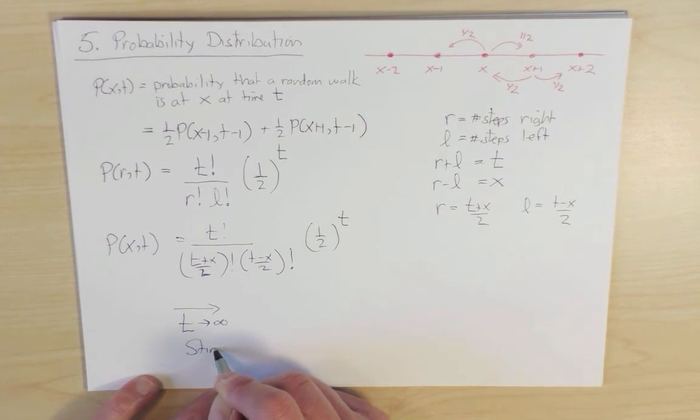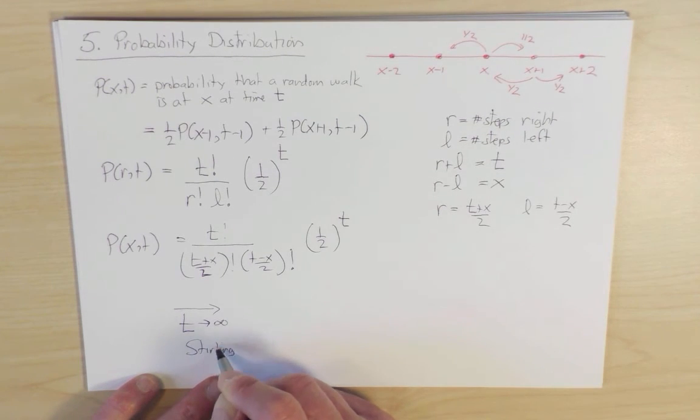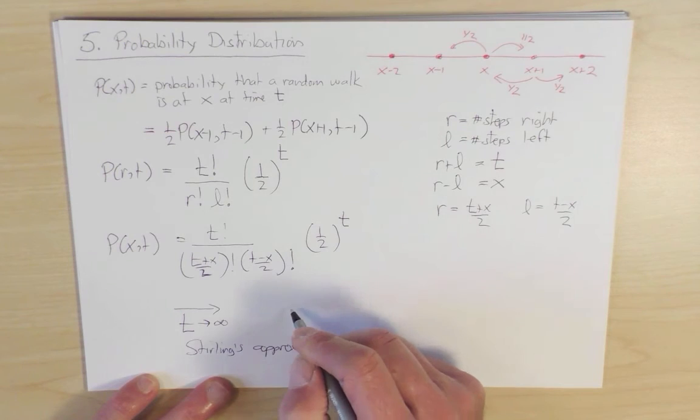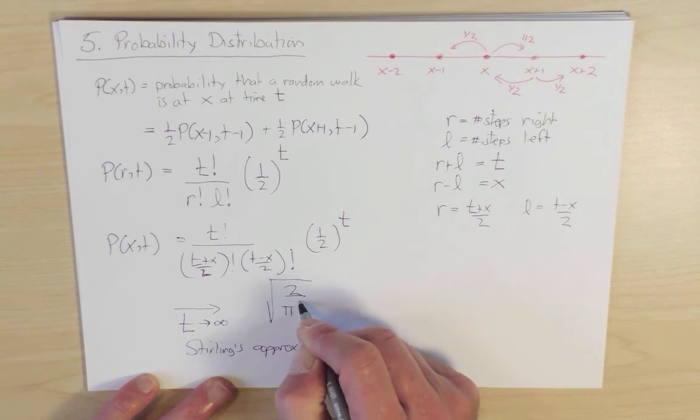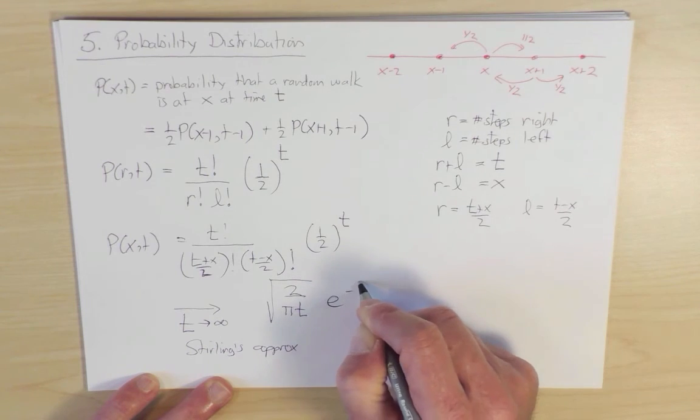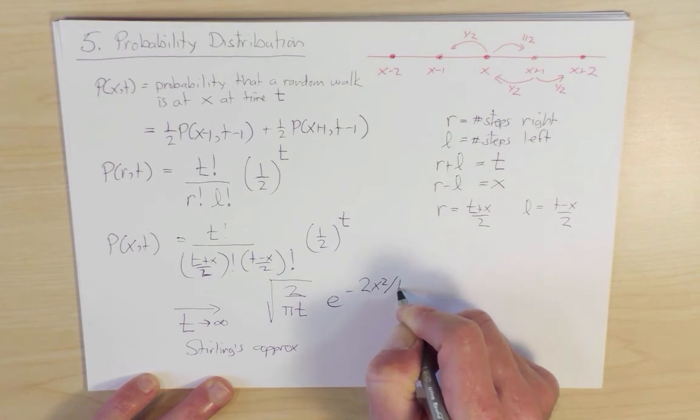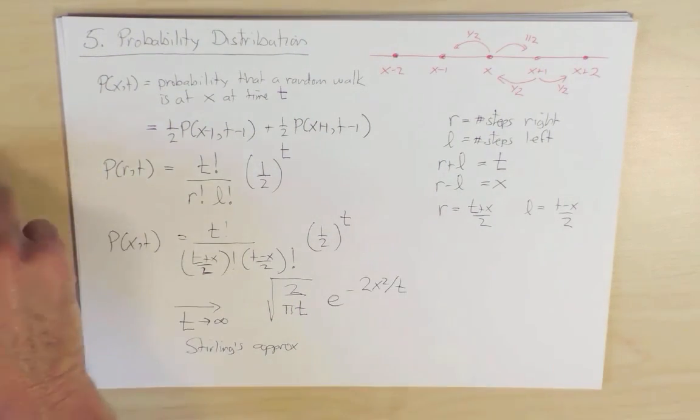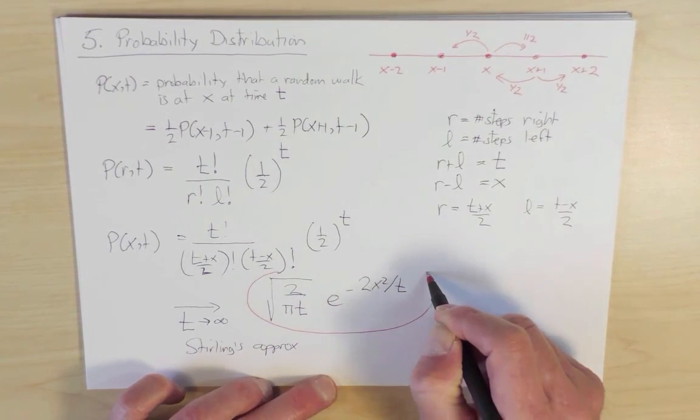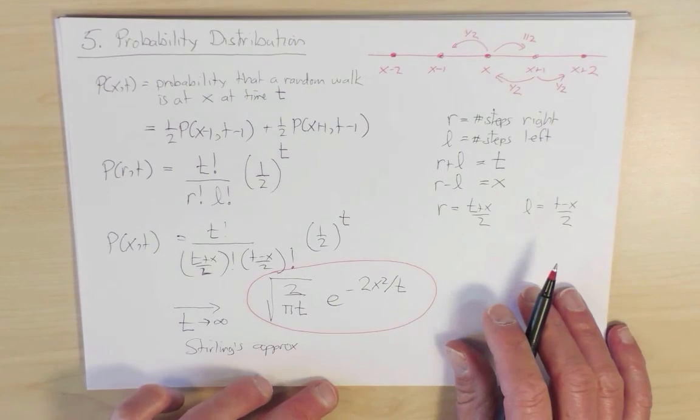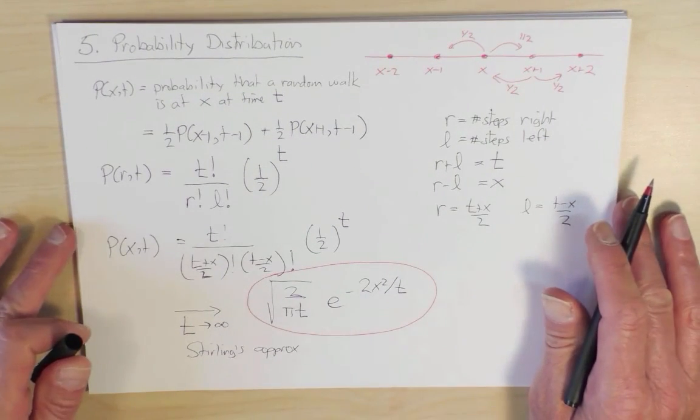And the result is that one finds after some algebra 2 over square root of pi t, e to the minus 2 x squared over t. So this quantity is known as the Gaussian probability distribution, and as we're going to learn, it's a relatively universal feature of random walks.